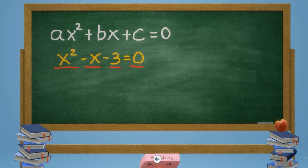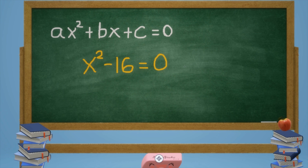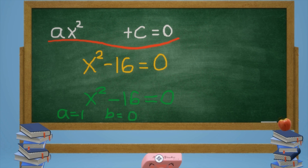The value of a is equal to 1, b is equal to negative 1, and c is equal to negative 3. This one is also in standard form. In this case there is no linear term, so the value of a is 1, b equals 0, and c is equal to negative 16.